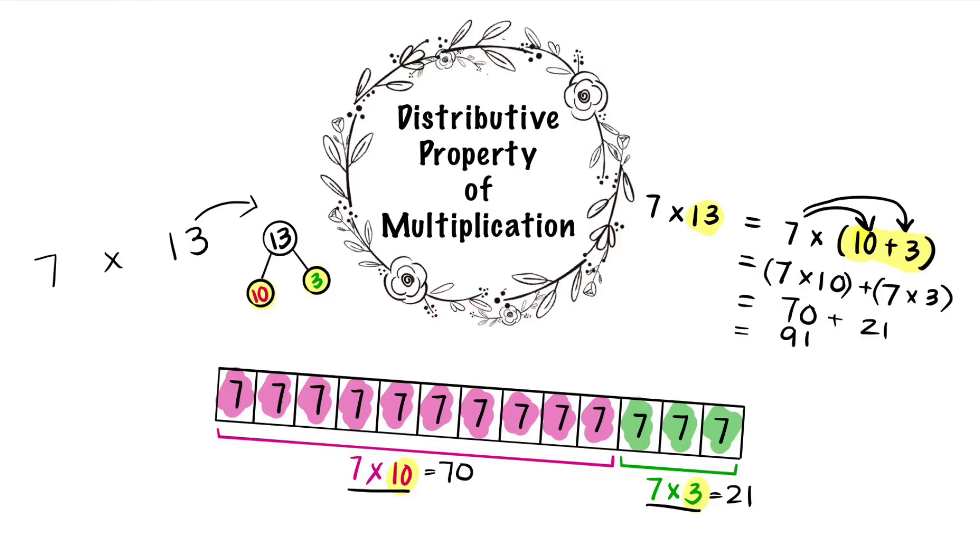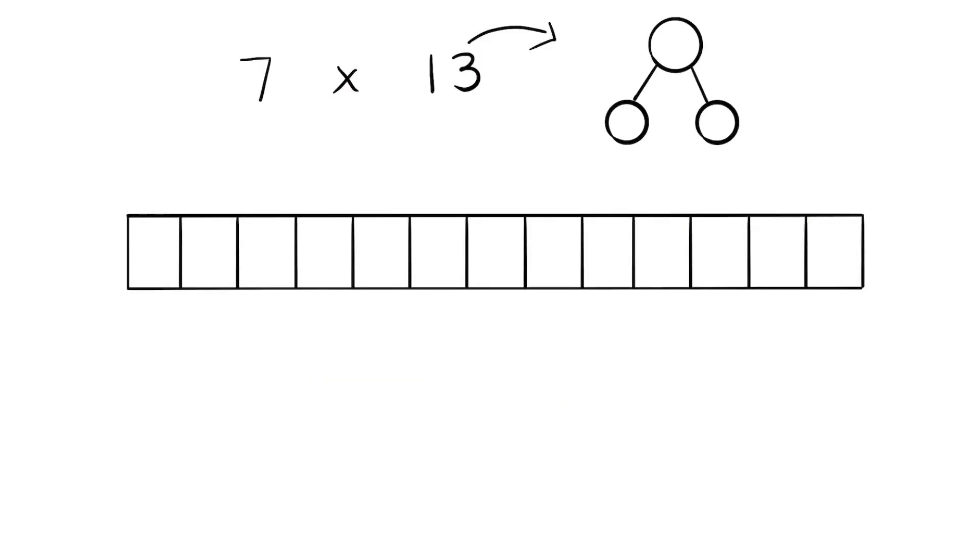Welcome back Math Grizz. Today we will be using the distributive property of multiplication. 7 times 13.